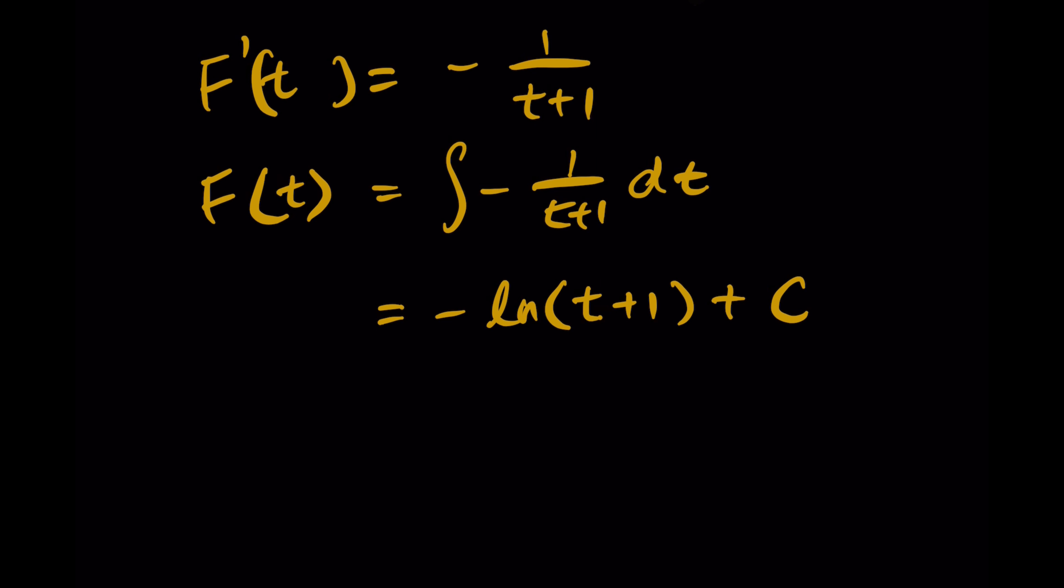But we don't like to have a constant c, so we need to find a way to calculate what c is. When t equals 0, we have F(0), and ln(1) is actually 0, so we know c must equal F(0).